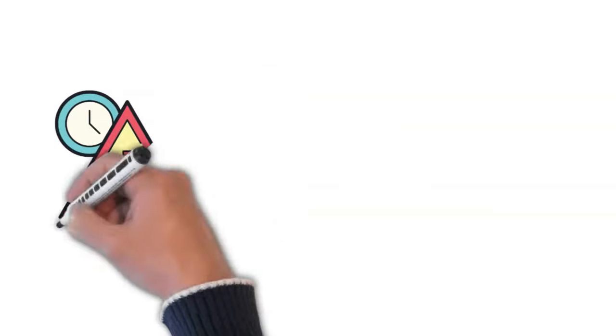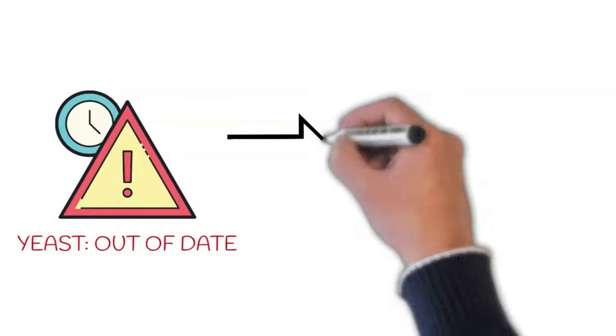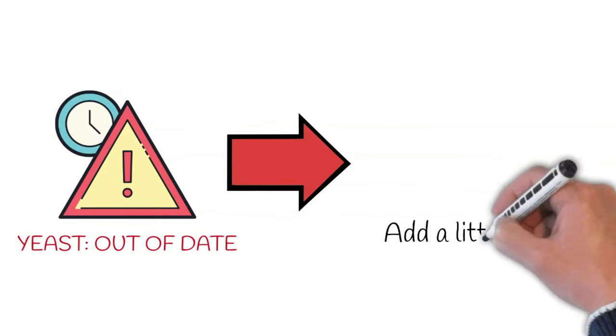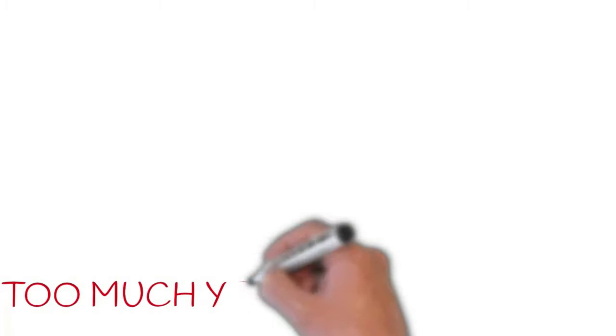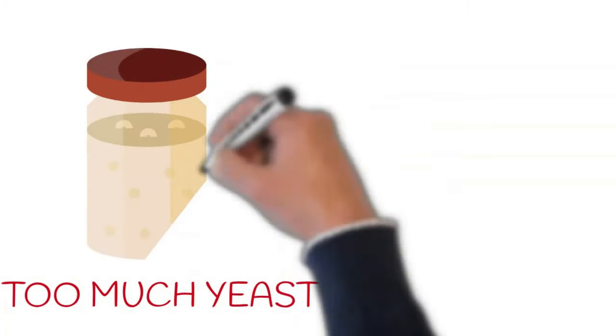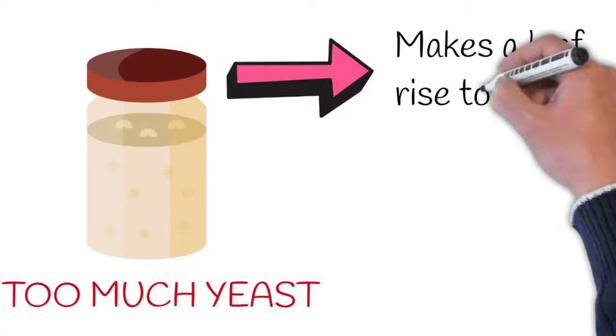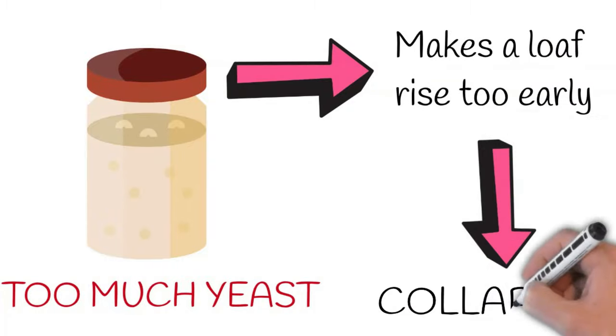Also, check that your yeast is not out of date. If it is, consider adding a little bit more to help it rise. Also, too much yeast could cause the sinking of the loaf. Too much yeast makes a loaf rise too early and then collapse.